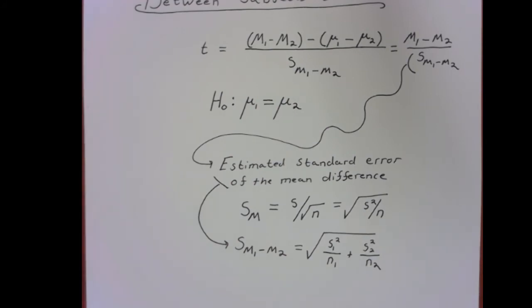And conceptually, that's how the background of a between-samples t-test really plays out. We have a mean difference, and then we divide that mean difference by how much difference we would expect on average just due to random chance.